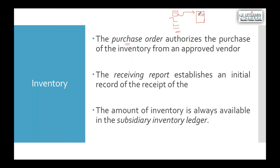A purchase order - or PO - is a local purchase order (LPO) when buyer and seller are in the same country or city. The LPO states that we are ready to buy goods at agreed prices and terms. Upon receiving the LPO, the seller arranges and delivers goods as per agreed terms. Then inventory is received and stored in the warehouse - going to the factory for production in a manufacturing company, or to the showroom for sale in a trading company.